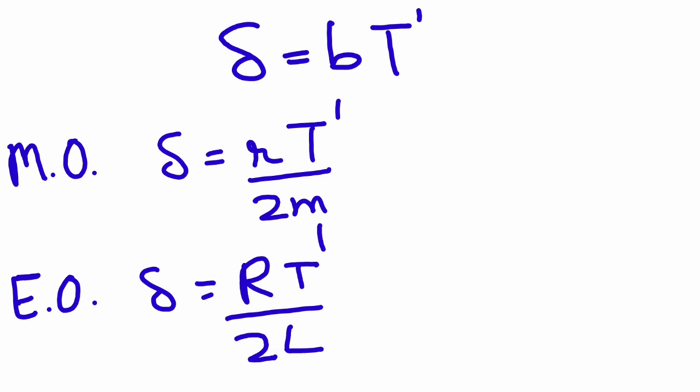Now let's discuss the expression for logarithmic decrement and the factors it depends on. As we saw in the previous slide, relaxation time is inversely proportional to b. Here you will see that delta is directly related to b: delta (logarithmic decrement) is equal to b × T′. For a mechanical oscillator, b = r/(2m), so delta = r·T′/(2m). For an electrical oscillator, b = R/(2L), so delta = R·T′/(2L), where R is resistance.